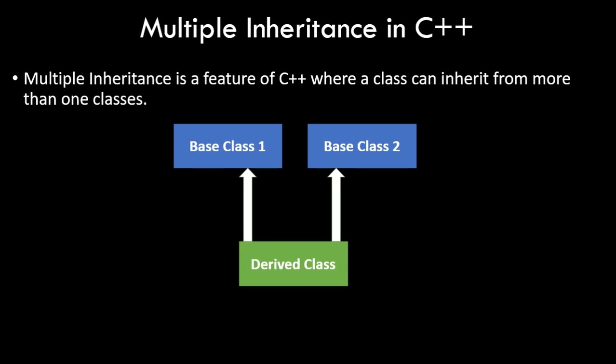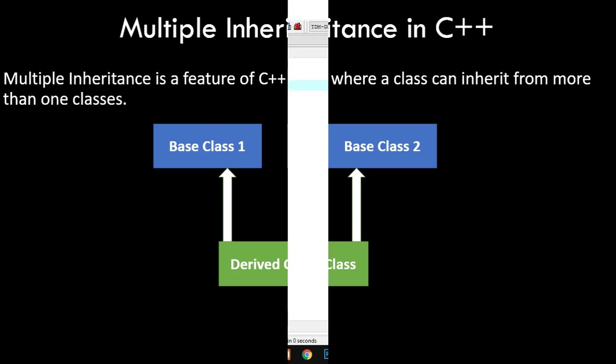Multiple inheritance is a feature of C++ where a class can inherit from more than one class. In the diagram we have base class 1 and base class 2, and the properties from both classes are being inherited in the derived class. This is a special type of inheritance because there arises a scenario where there is confusion in the program — we'll address that in the program itself. Now let's dive into the programming part.